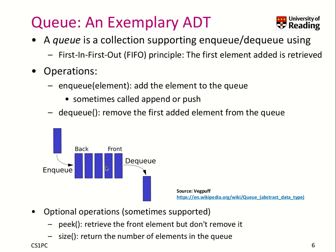It is really like a waiting queue in real life, such as in a supermarket. The enqueue operation puts an element at the back of the queue — sometimes called push or push back. The dequeue operation removes the front element — sometimes called pop or pop front. Optional operations include peek, which lets you look at the front element without removing it, and size, to get the number of elements in the queue.